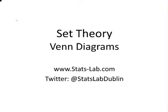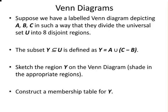In this presentation we are going to look at set theory, Venn diagrams used in set theory. Now suppose we have a labeled Venn diagram depicting the regions A, B, and C in such a way that they divide the universal set U into eight disjoint regions.